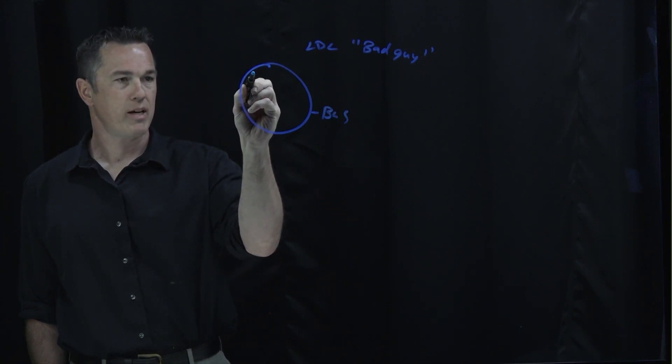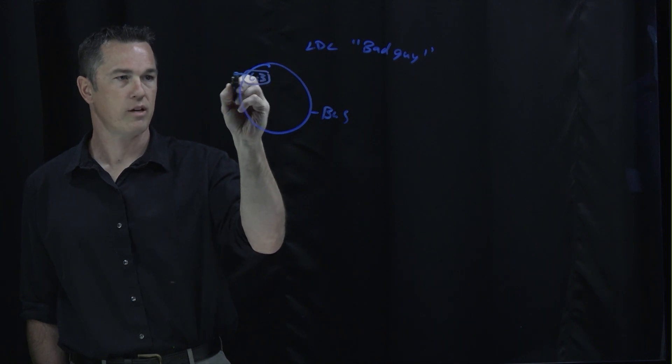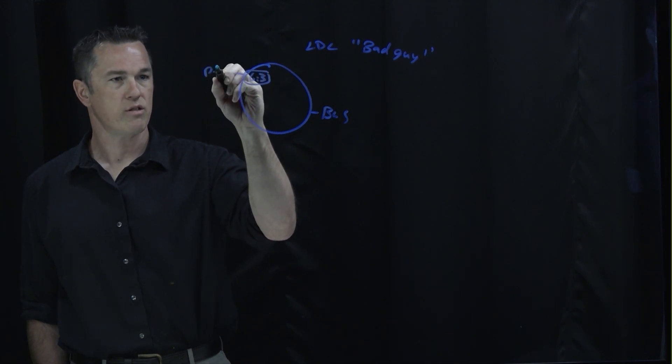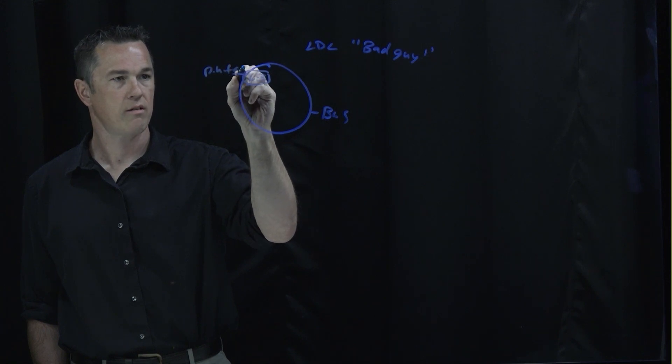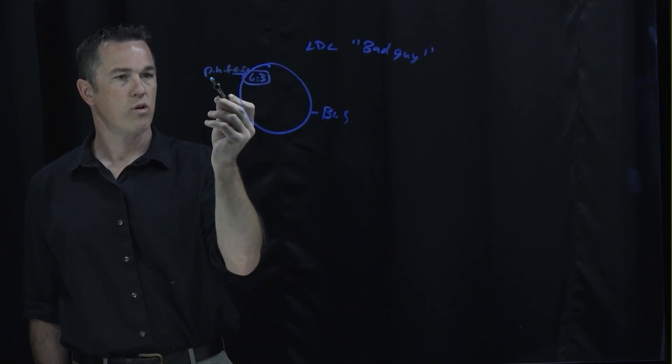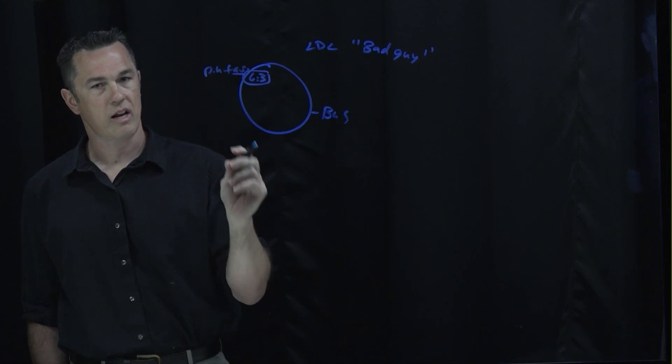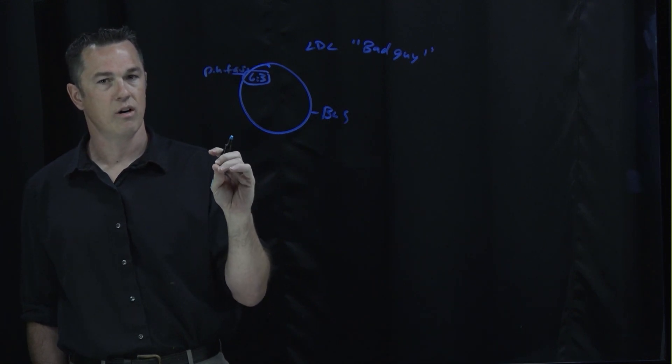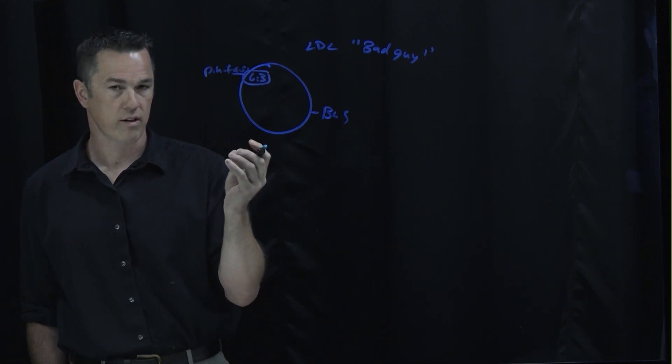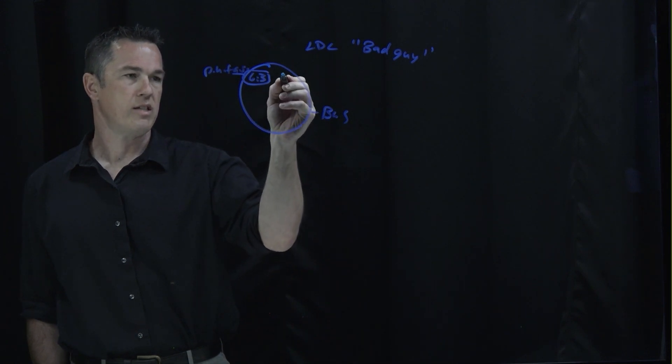We have the omega-6 and omega-3 fats, which if you've seen my other lectures are these polyunsaturated fats. And remember, the more unsaturated a fat is, the more unstable it is and the more likely to oxidize or go rotten or rancid. Then you've got saturated fat.